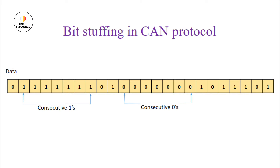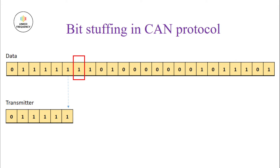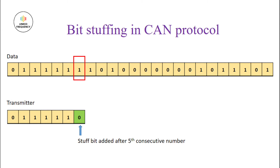This can be done by adding additional bits of opposite polarity after every fifth consecutive same value. The data is taken bit by bit until it encounters more than five consecutive same values. You can observe there are more than seven consecutive 1s in the data. This situation is handled by the transmitter — after encountering the fifth consecutive value, the transmitter adds a bit of opposite polarity after the fifth consecutive same value. The added bit is the stuff bit, which is of opposite polarity.